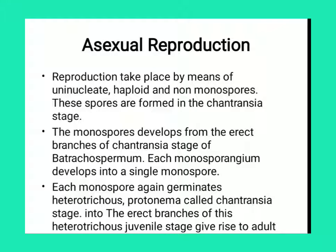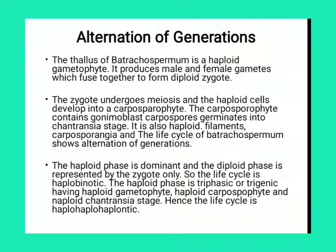Asexual reproduction takes place by means of uninucleated, haploid monospores. These spores are formed in the Chantransia stage. After the Chantransia stage, some spores are developed — this is known as the monospore. The monospore develops from the erect branches of the Chantransia stage of Batrachospermum, and each monospore again germinates into a heterotrichous protonema-like structure called the Chantransia stage, and the erect branches of this heterotrichous juvenile stage give rise to the adult stage.